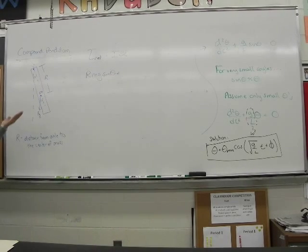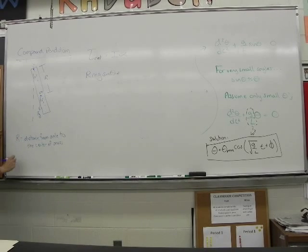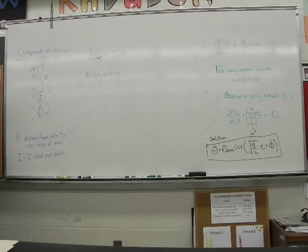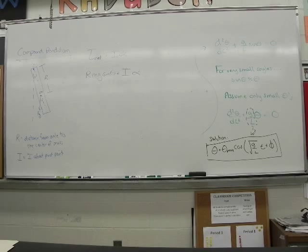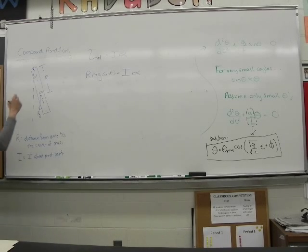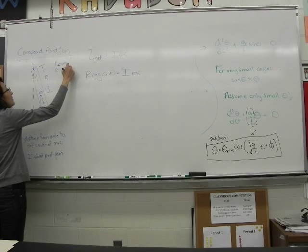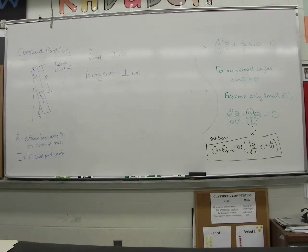On the right side we have I — the I about the pivot point, not necessarily the I about the center of mass. It has to be the I about the pivot point. Then alpha. We are going to assume theta is small, so we'll be able to use the small angle approximation and get rid of the sine theta. You tell me when you're done — what omega is and what the period is, and then we'll do it together.